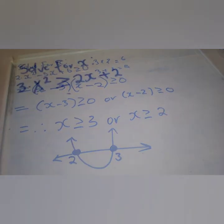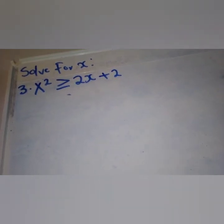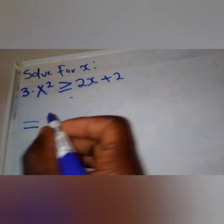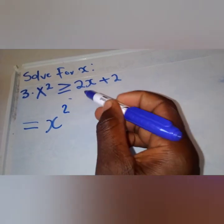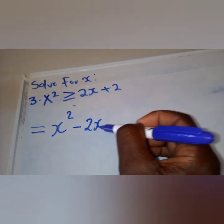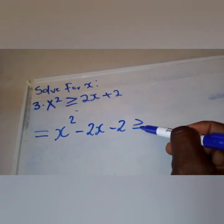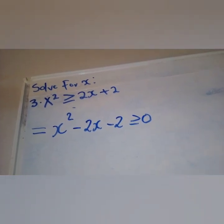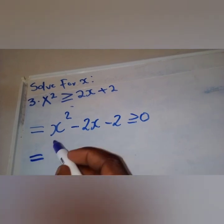Next example: x squared is greater than or equal to 2x plus 2. We need to get this into standard form. Transposing 2x and 2 to the left side gives x squared minus 2x minus 2 greater than or equal to zero. Now everything is in standard form — always ensure this before proceeding. Let us do the factorization.